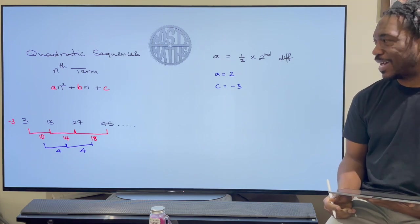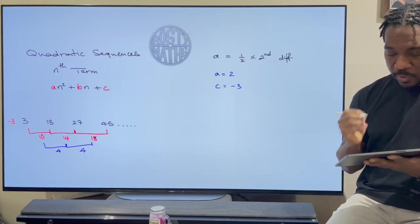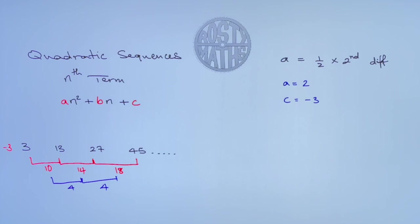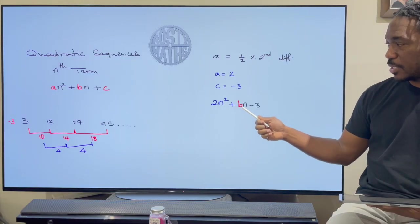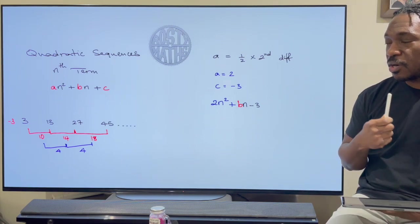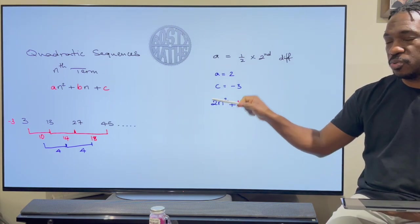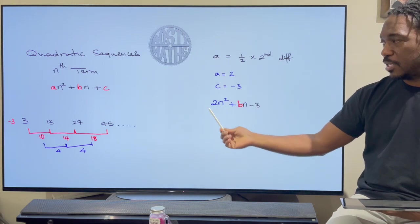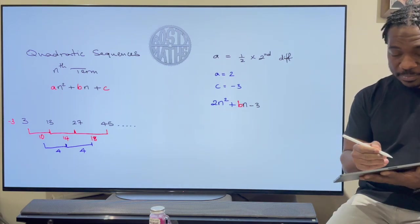So what have we actually got so far? Well if I substitute my a and my c there what I've actually got is 2n² plus b times n minus 3 there. Now I need to work out what b is. Now b is easy to work out because all I need to do is substitute one of the terms into here. So here's what I mean by that.